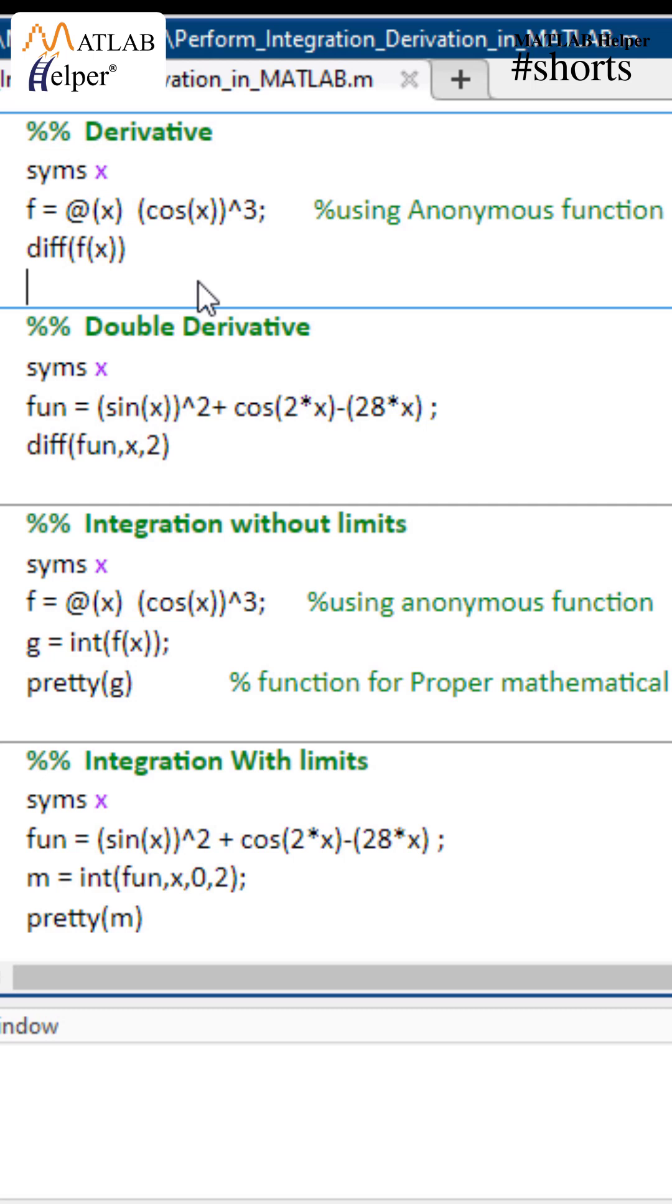The syms x command is used to declare the symbolic variable that is used in the equation. This is the syntax for declaring the trigonometric equation using the anonymous function.